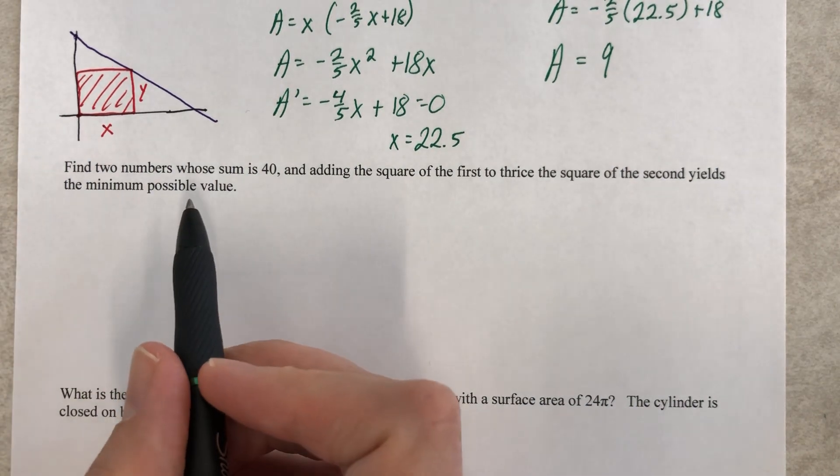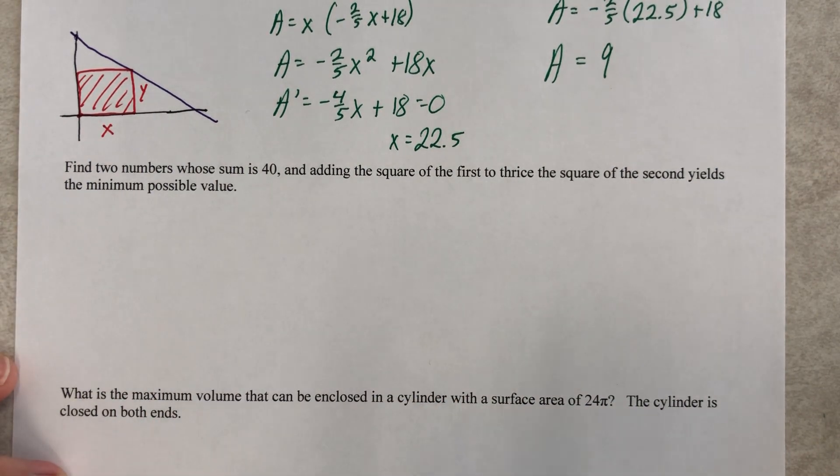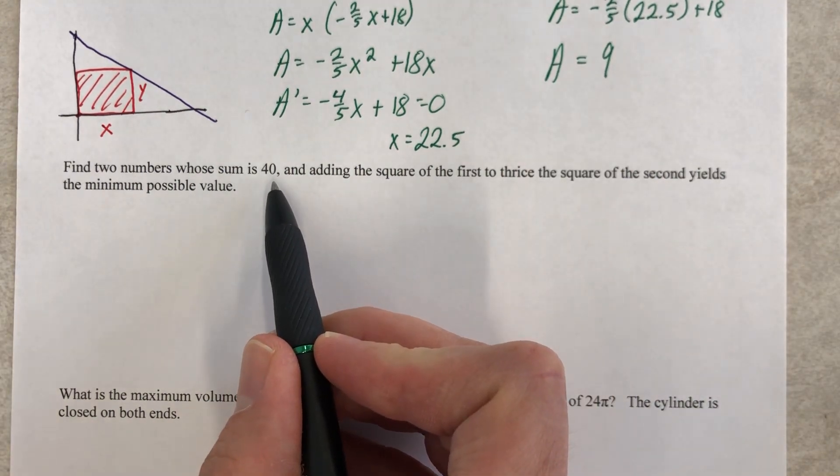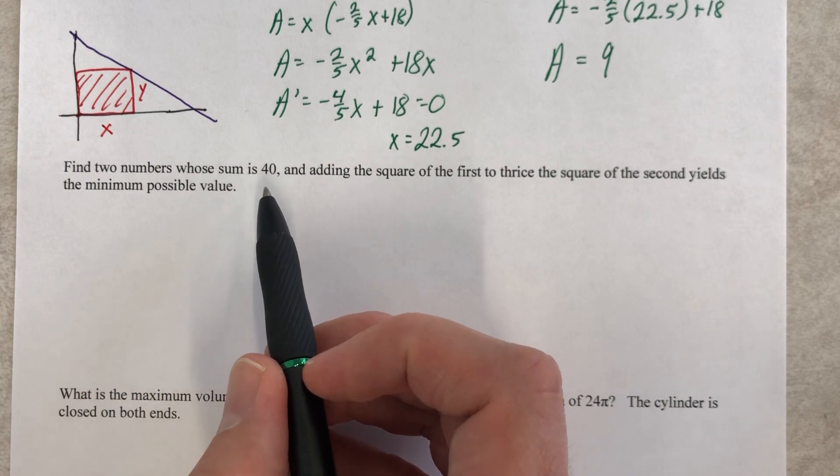Let's keep reading. Find two numbers. Final answer will be two numbers. Column X and Y, column A and B, column whatever you want. I'm gonna use A and B because I'm just kind of tired of using X and Y. Whose sum is 40. Let's just stop right there. That actually tells us the first formula.